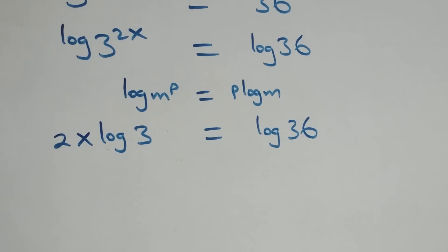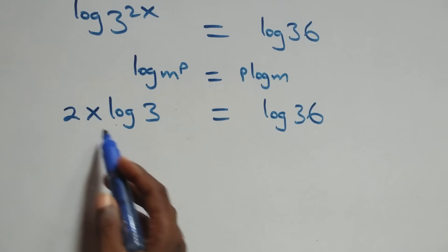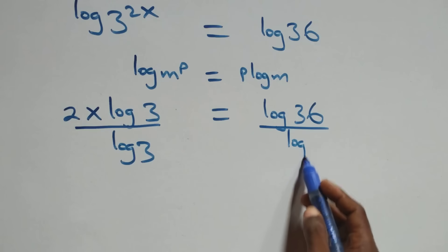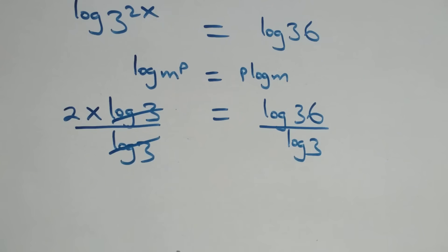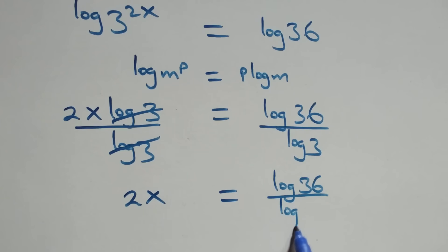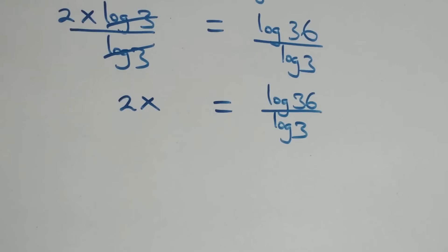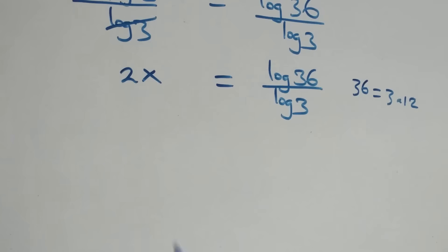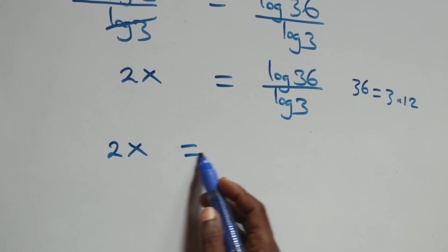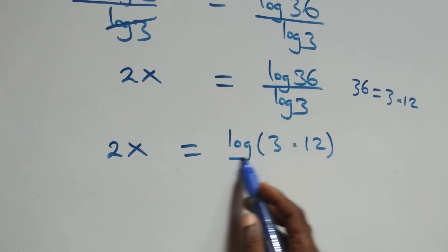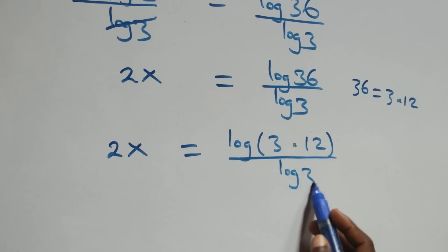The next step here, we divide both sides by log 3 — divide this side by log 3, and also divide this side by log 3. Log 3 cancels each other, and we have 2x equals to log 36 over log 3. Then we can write 36 as 3 times 12, so 2x equals to log(3 times 12) over log 3.